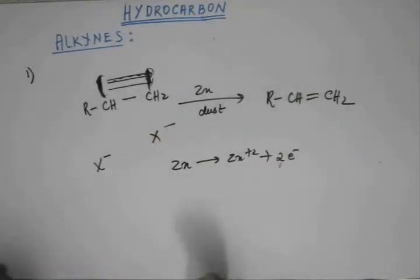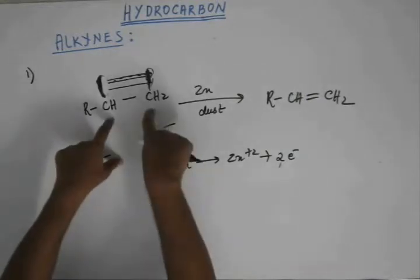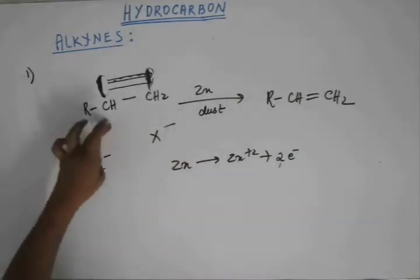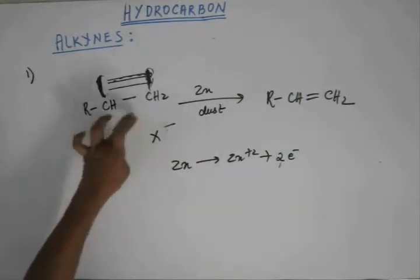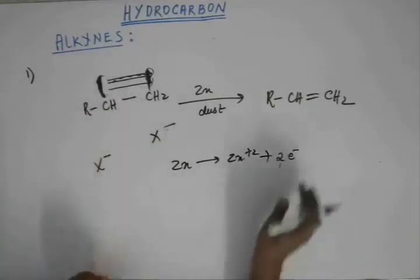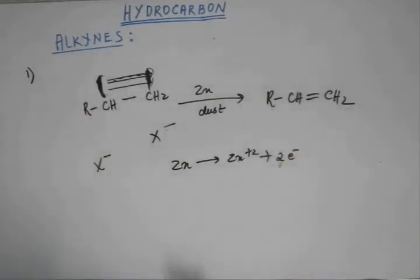Now suppose the same process is repeated and there are two more halogens on this carbon. One more pi bond will be formed between these two carbons, resulting in an alkyne.